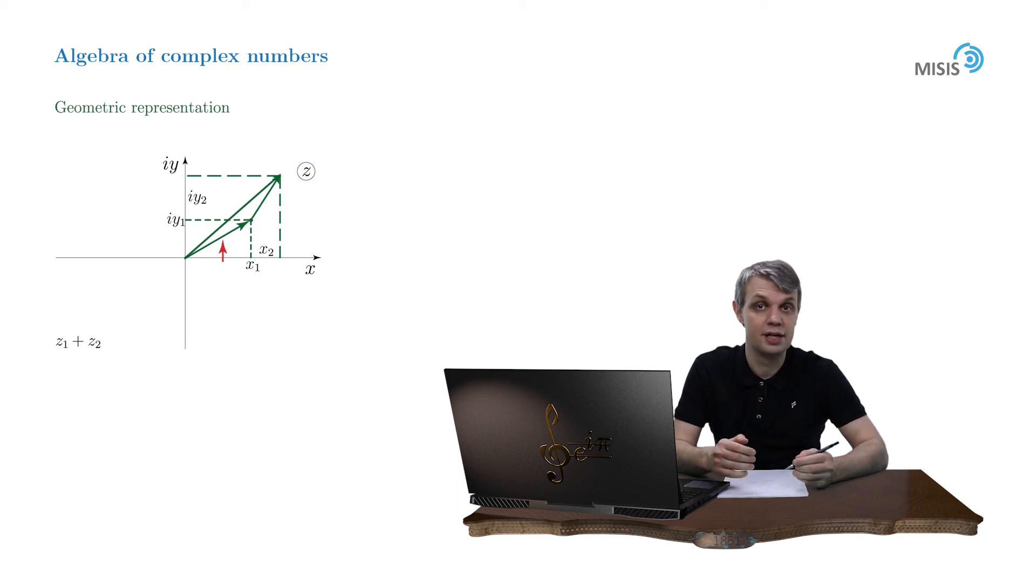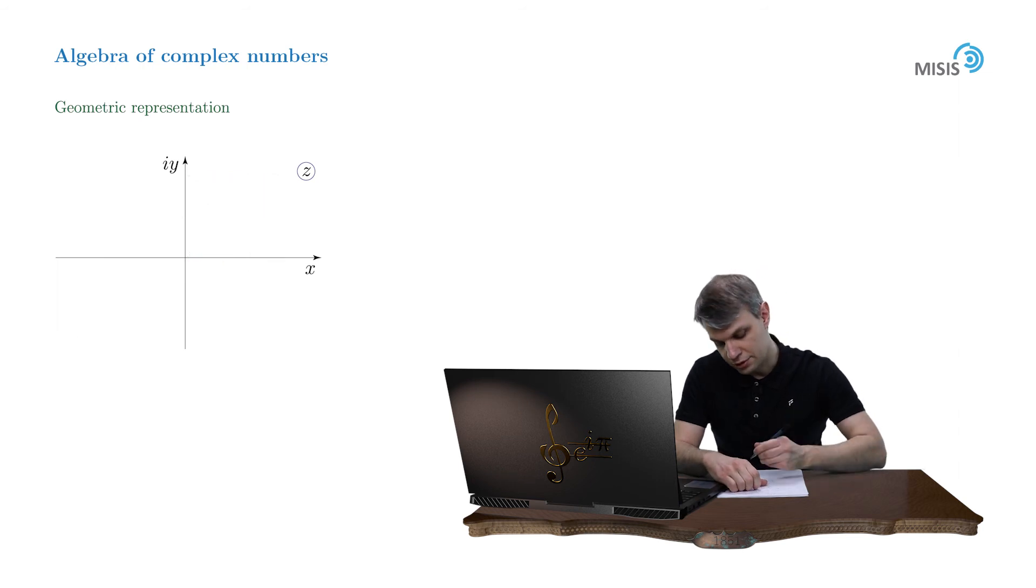But to understand better how a geometrical nature of complex number works, let's solve a simple problem. Let's draw a locus of points defined by the following equation: the modulus of z plus 1 is equal to 2. So let's try to understand how this equation works in a complex plane. There is some number z and we want to add complex number 1. And what is complex number 1? It's a simple vector directed along the real axis to the right with unit modulus.